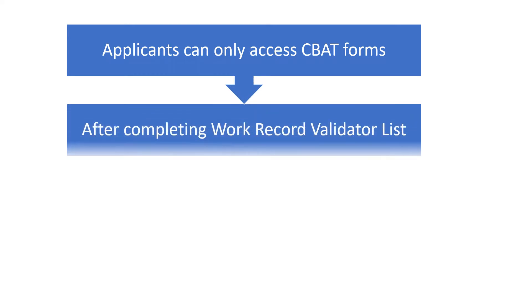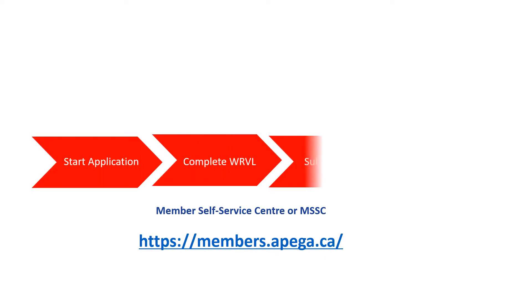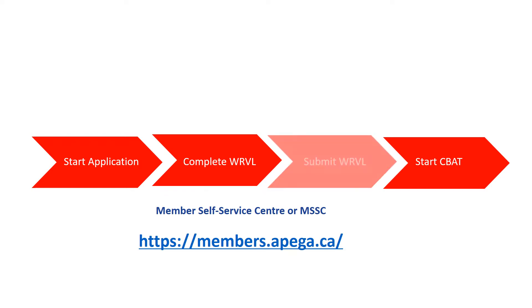Applicants can only access the CBAT forms after completing and submitting their Work Record Validator List, or WARVL, in APEGA's Member Self Service Center, or MSSC. This screen summarizes the steps to accessing the CBAT. Engineering applicants must start an application, complete the WARVL forms in the MSSC, and submit completed WARVL forms. Only then can applicants start working on their CBAT forms.